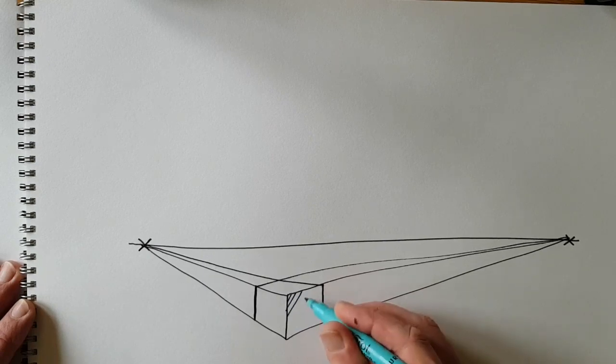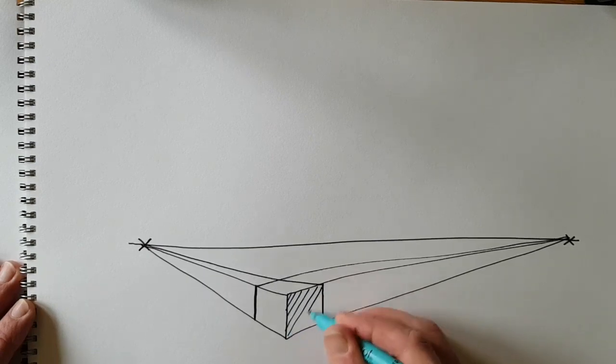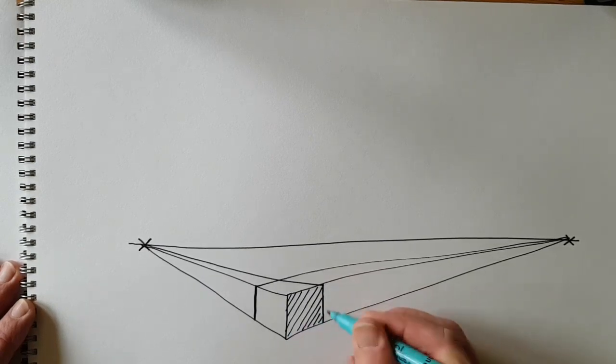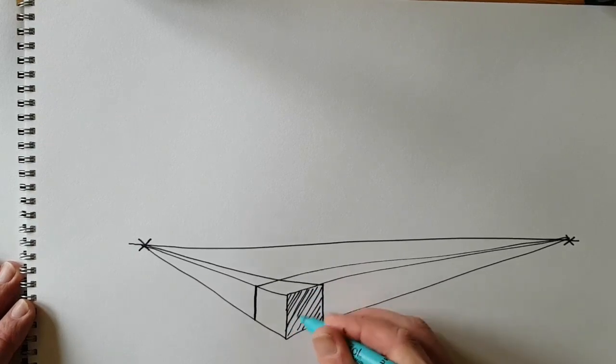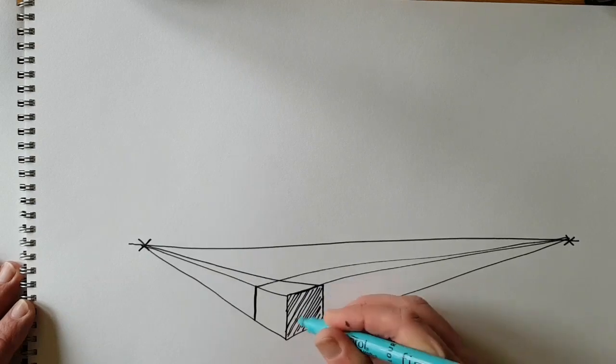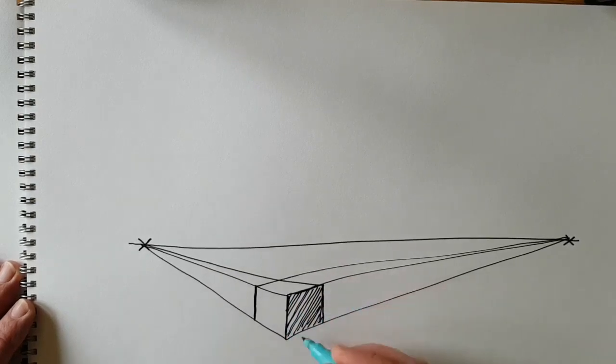Once again if you want to you can put some shading in. I'm doing this with a felt tip so you can see it nice and clearly you can work in felt tip or biro or pencil it's completely up to you.